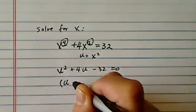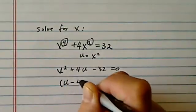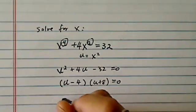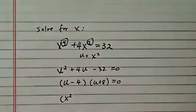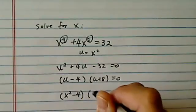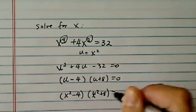From here it's pretty easy to factor: (u - 4)(u + 8) = 0. Let's substitute back in, the fact that u = x². So we get (x² - 4)(x² + 8) = 0.